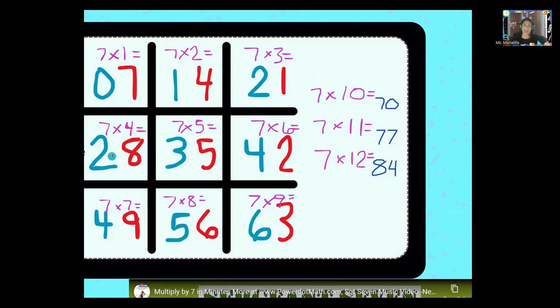Come and see what I can do. 28, 35, 42. Easier than ABC. 49, 56, 63. 70 is next. There's more. 77, 84.